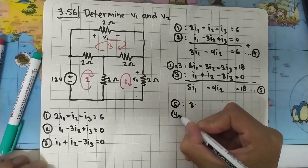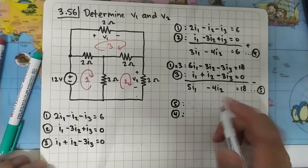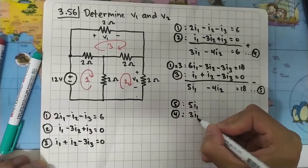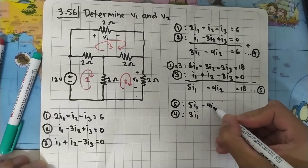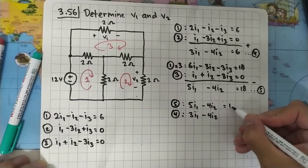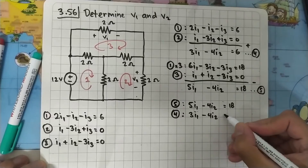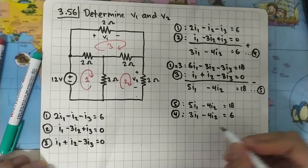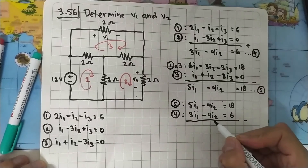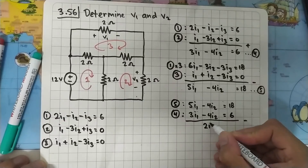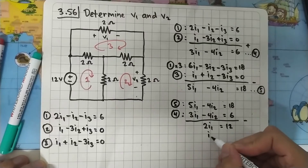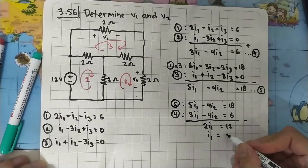Using Equations 4 and 5 together: 5I1 - 4I2 = 18 and 3I1 - 4I2 = 6. Subtracting, the -4I2 terms cancel, giving 2I1 = 12, so I1 = 6 amperes.